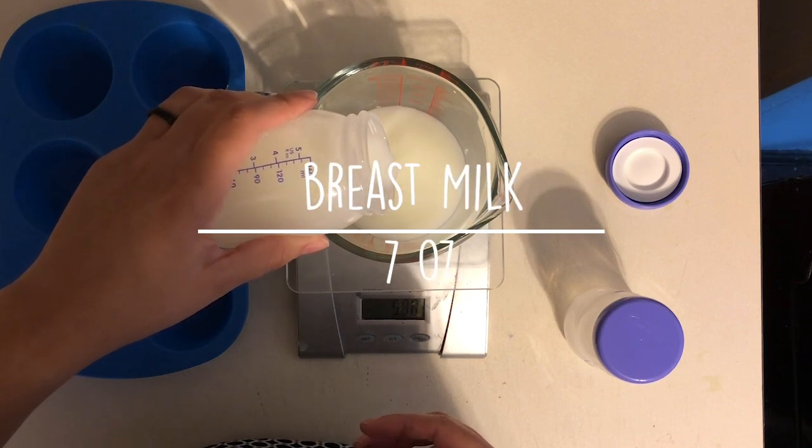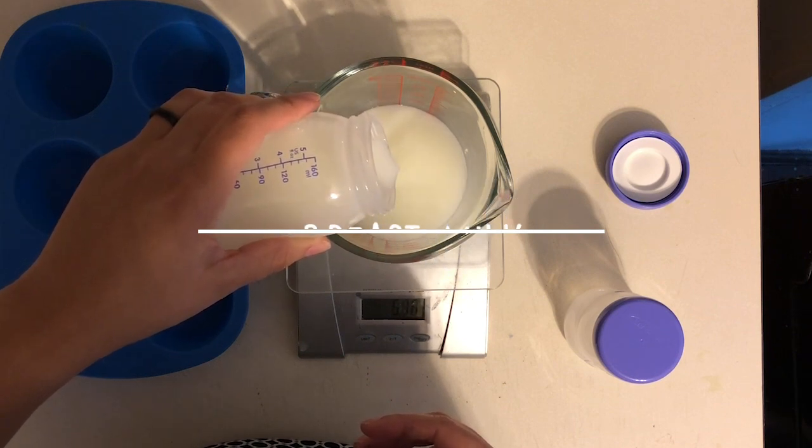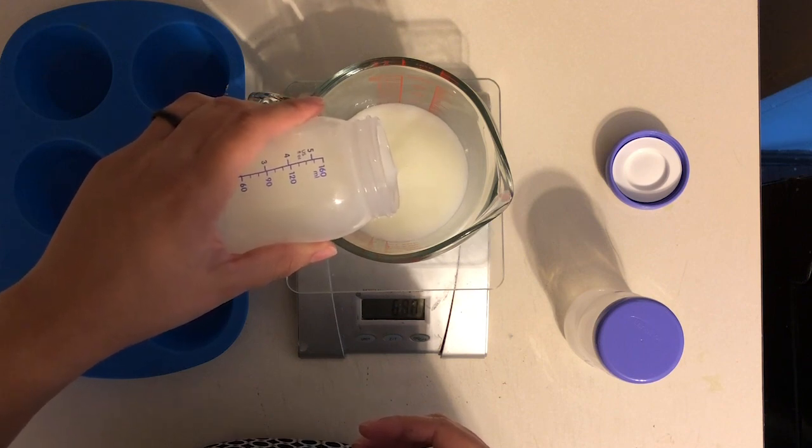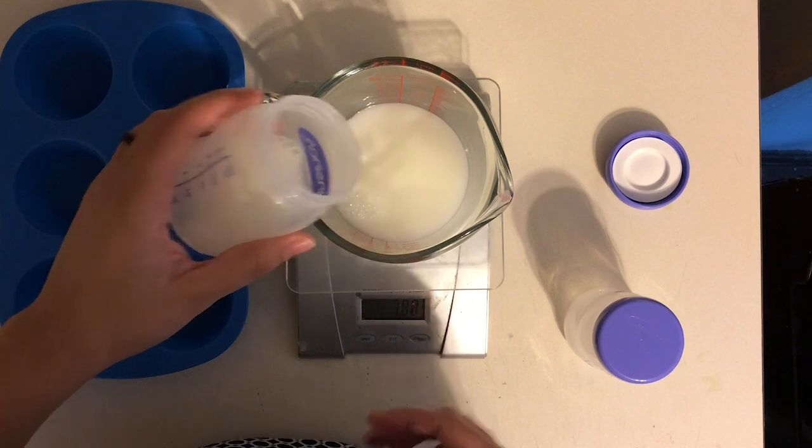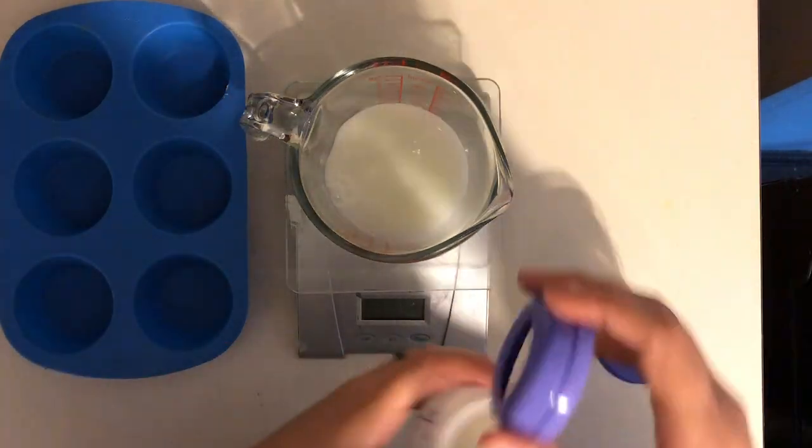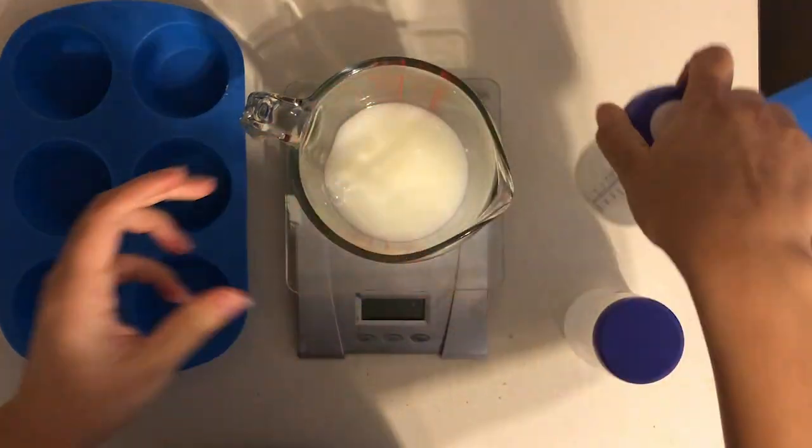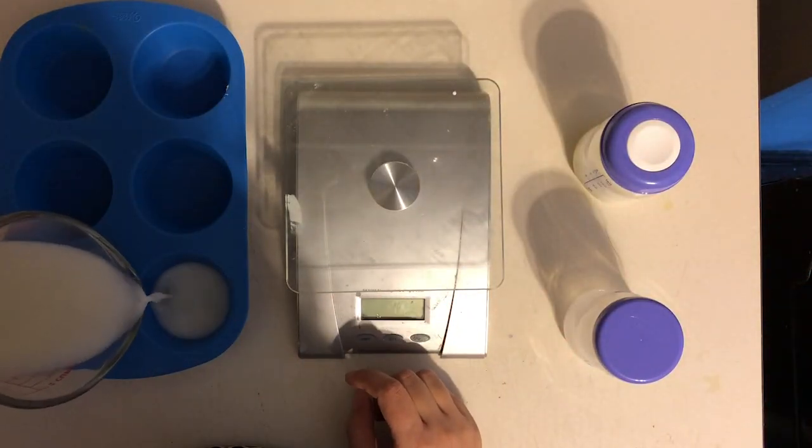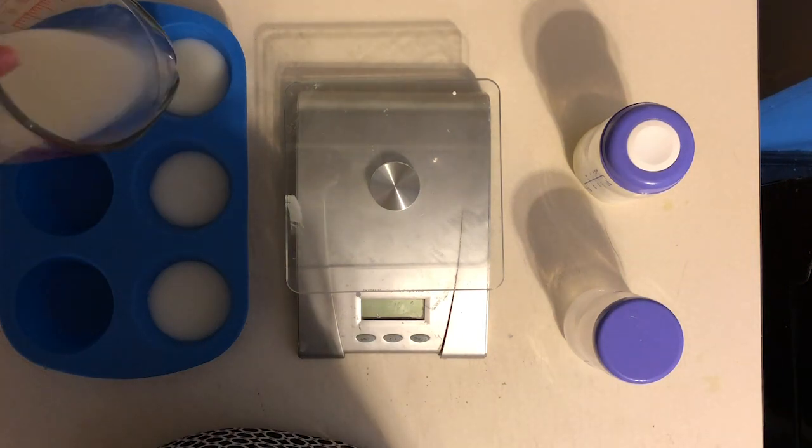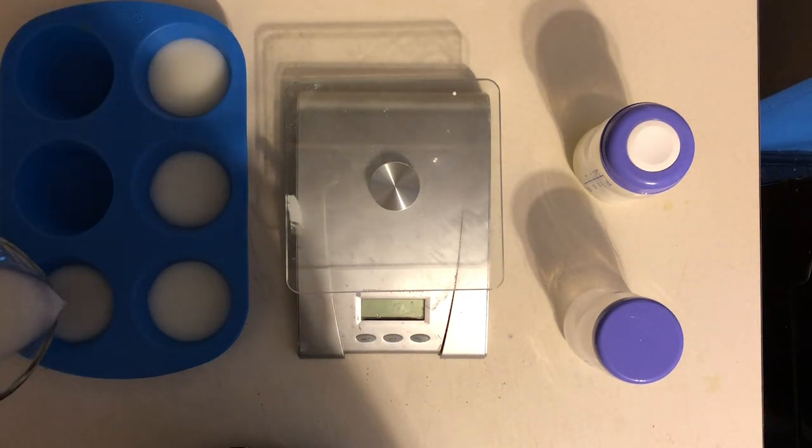We'll start with seven ounces of breast milk. Since we're going to be mixing it with lye, we'll pop it in the freezer overnight to keep the temperature cold when we add the lye. If this is your first time making cold processed soap, make sure you do your research and use all necessary protective gear.